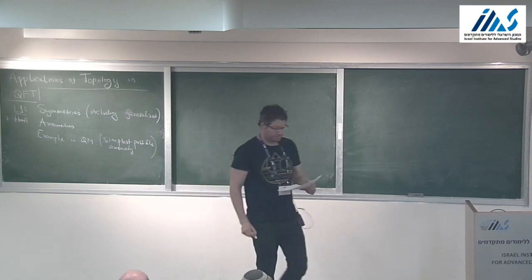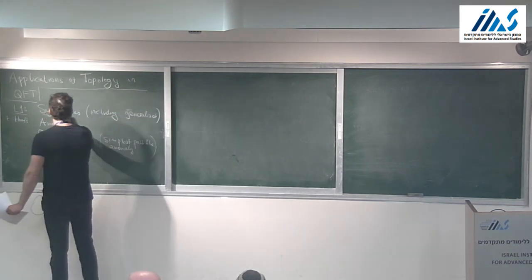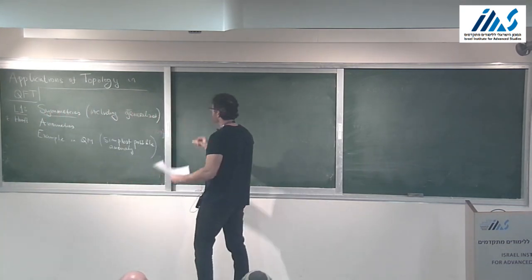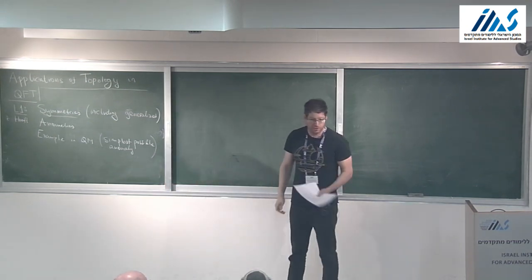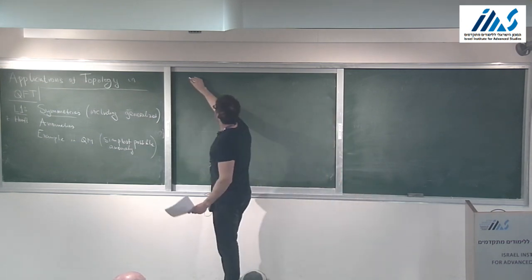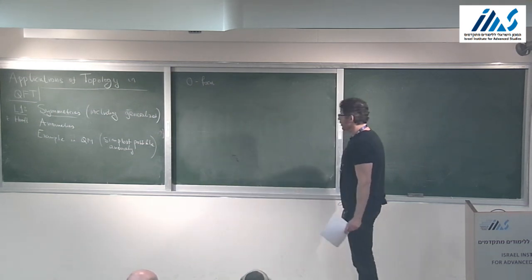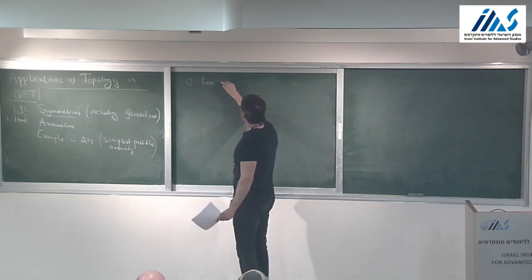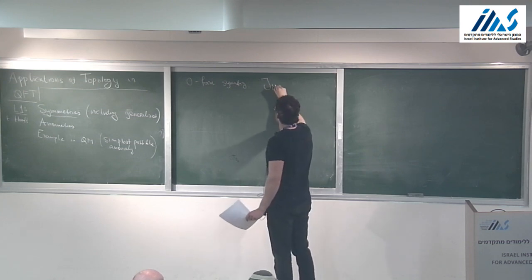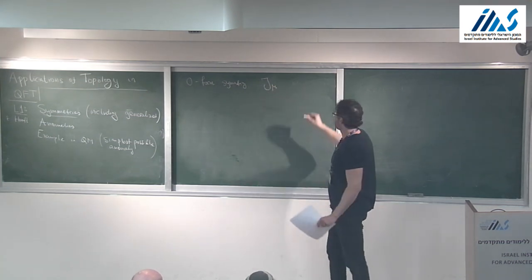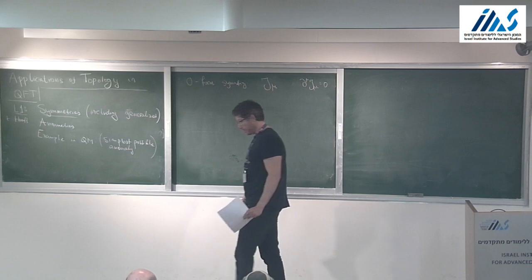I'll start with the notion of symmetries, trying to define symmetries in general. I'll start for simplicity from continuous symmetries, which are the most familiar constructions from textbooks. The most familiar construction will be what we refer to as a zero-form symmetry. A zero-form symmetry is essentially a conserved current J_μ satisfying ∂_μ J^μ = 0.